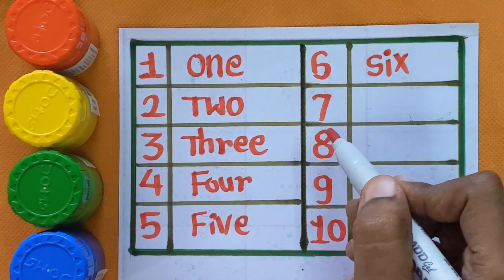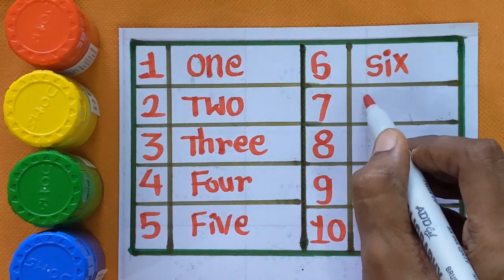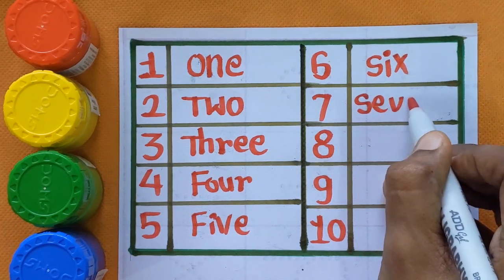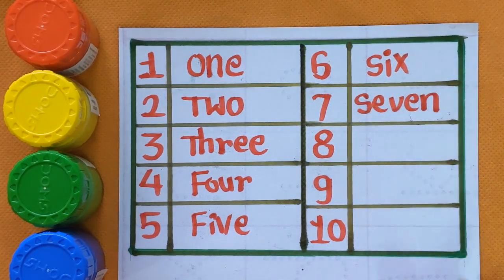After number 6, next number is number 7, S-E-V-E-N, seven.